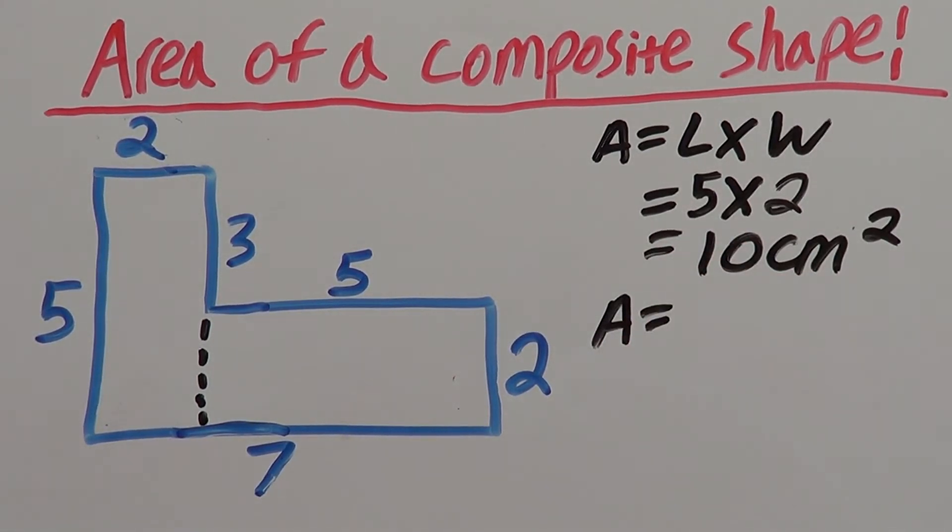This time, don't use this seven down here because the seven goes all the way to here. And we only want this part as the area. So, we can see we have a five here which gives us the correct length.